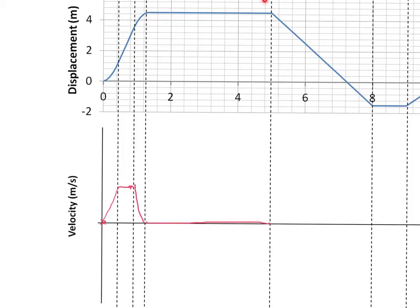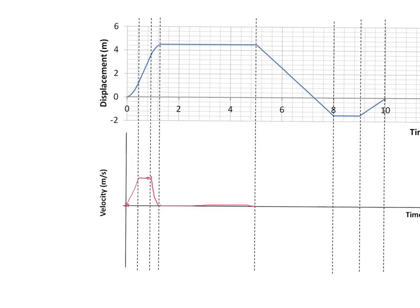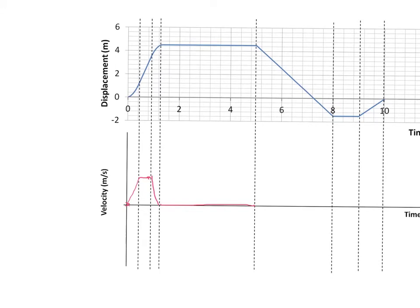Now let's have a look at this section on the right-hand side — this long, sloping section. What you'll see is it's got a negative gradient, so the velocity must therefore be negative. And you'll see that the gradient is constant throughout that section, so it's a constant negative number. At the point where it goes from being flat to that constant gradient line, there's no curve or bend, so the velocity jumps straight from being zero to this negative value, and it remains constant throughout that section.